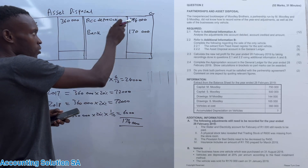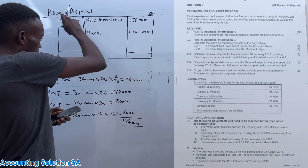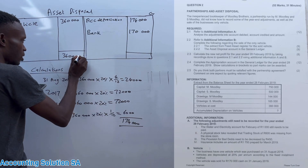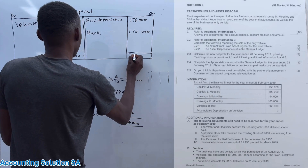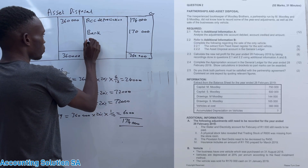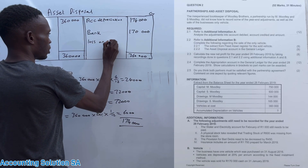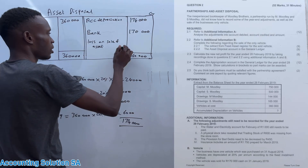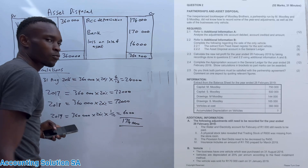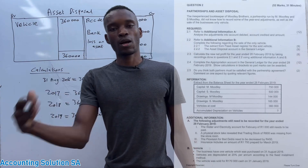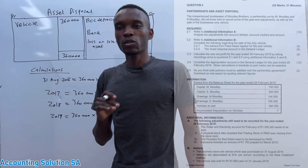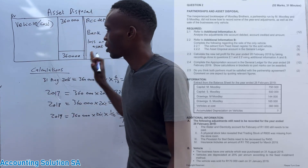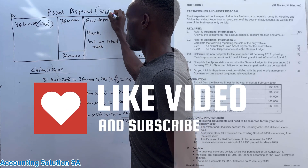The debit side has the cost price of 360,000. The credit side has accumulated depreciation of 174,000 plus bank of 170,000, which does not exceed 360,000. So the debit side of 360,000 is higher, which means we sold it at a loss on sale of assets. To calculate the loss, you subtract the credit side total from the debit side, giving you 16,000. Make sure that the cost price you record is only for the vehicle that has been sold.